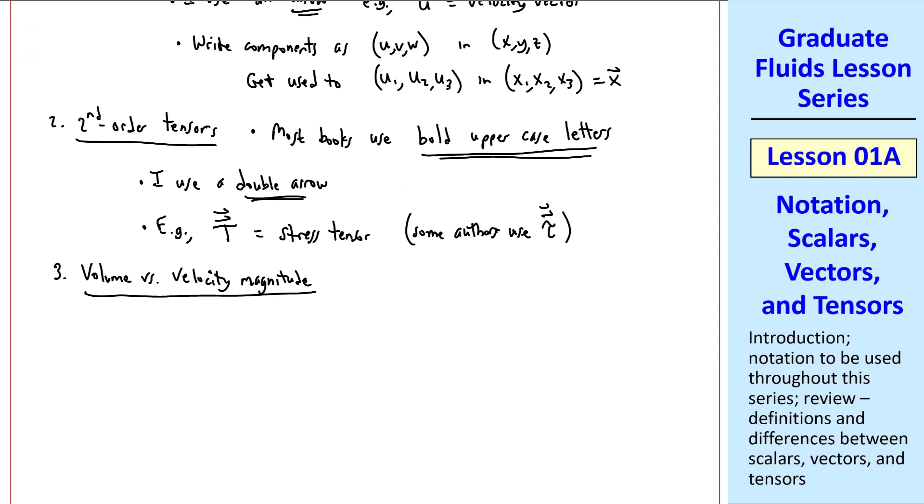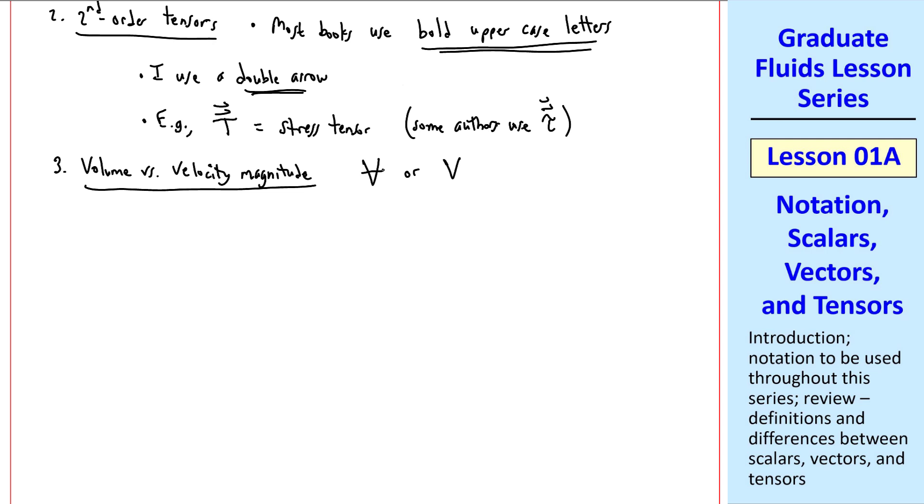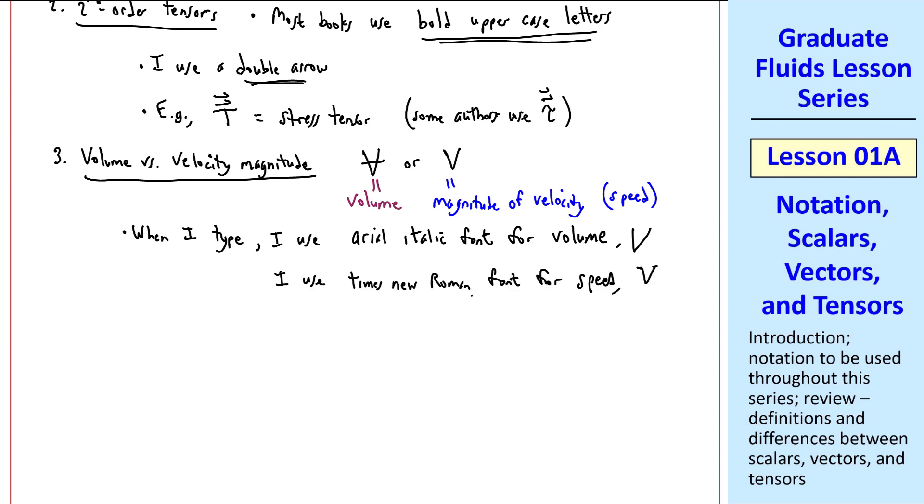Volume versus velocity magnitude. Both of them use a capital V. So to distinguish, I always put a line through my V when it means volume, and no line when it means magnitude of velocity, or speed. When I type, I use the Arial italic font for volume. I use Times New Roman font for speed, and we typically italicize all variables.